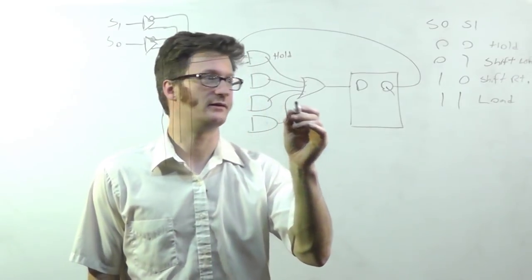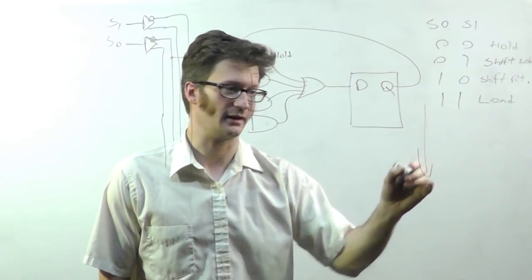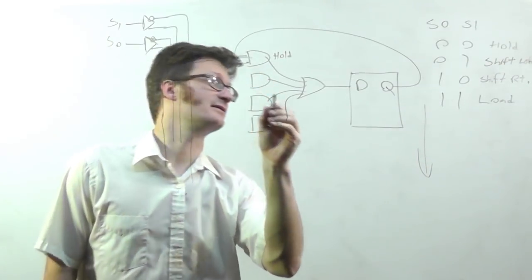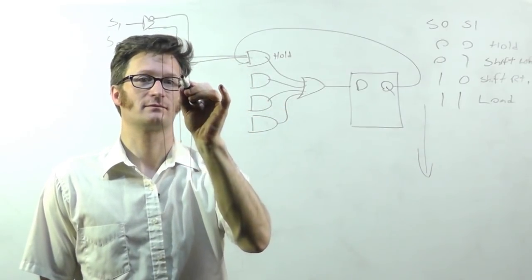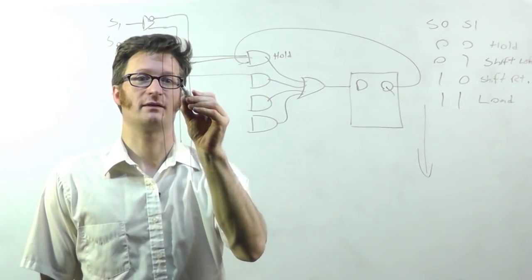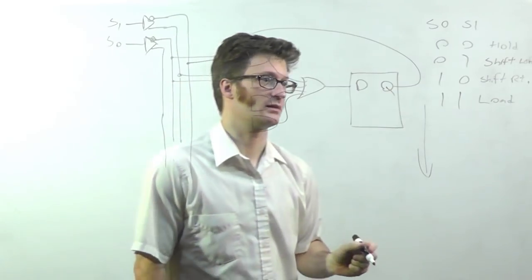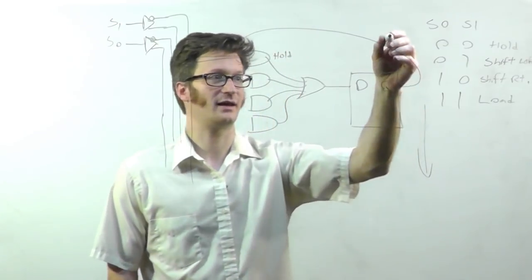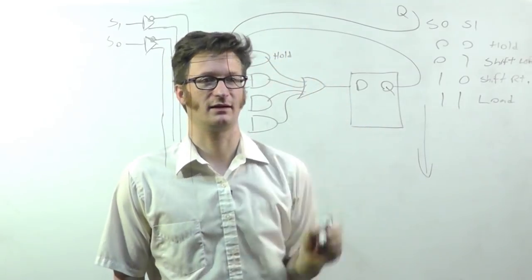And if I wanted to do 01, which would be shift left. And let's just call this direction left, even though it's down. S1 would be one, and the other is S0. Okay, so that one, I'm going to be taking the Q output from the previous and bringing it in here.